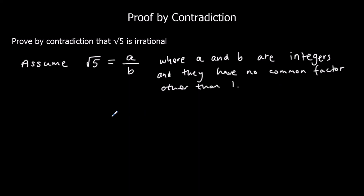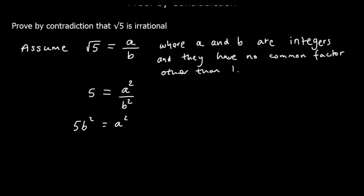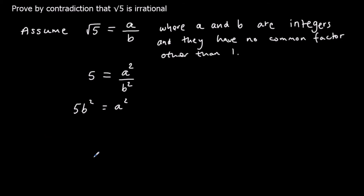Let's work with this and try to find a contradiction. We square both sides: root five squared is five, and (A over B) squared is A squared over B squared. Multiplying both sides by B squared gives us five B squared equals A squared. So A squared must be a multiple of five.